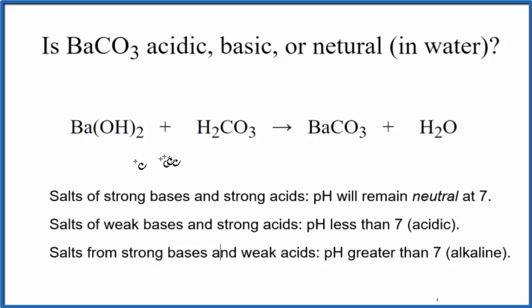So we have a neutralization reaction here. We have barium hydroxide, this OH tells us this is our base. And then we have carbonic acid. With that H in front, we're thinking this is our acid. So acid and base, we end up with barium carbonate and water.